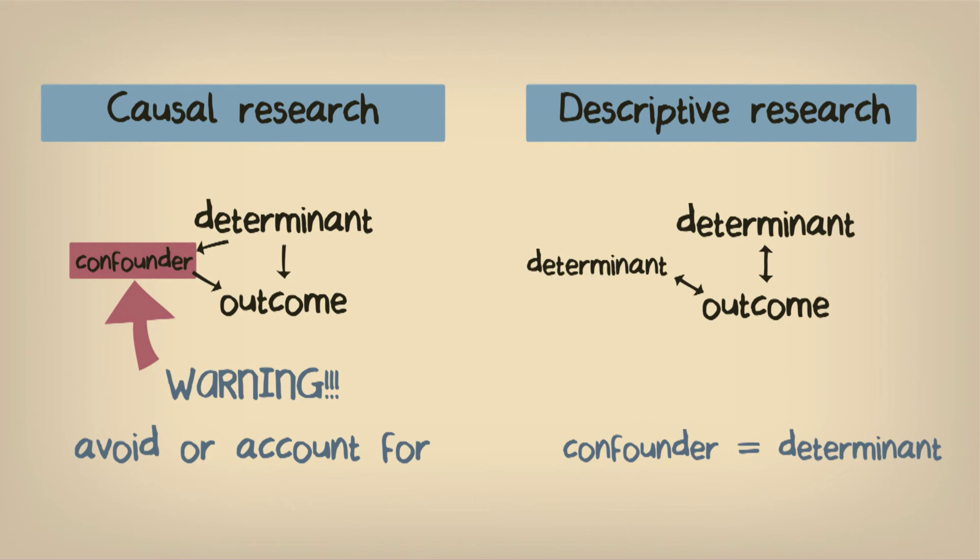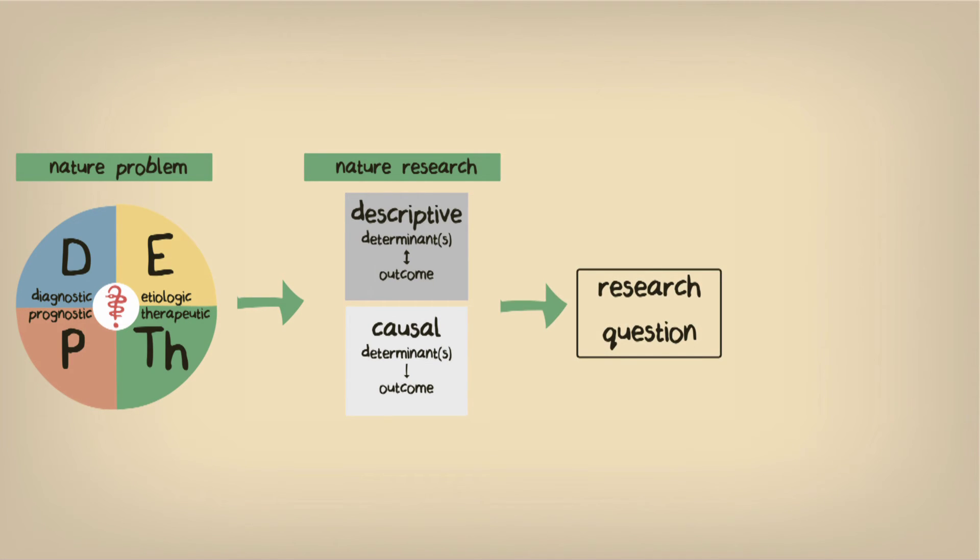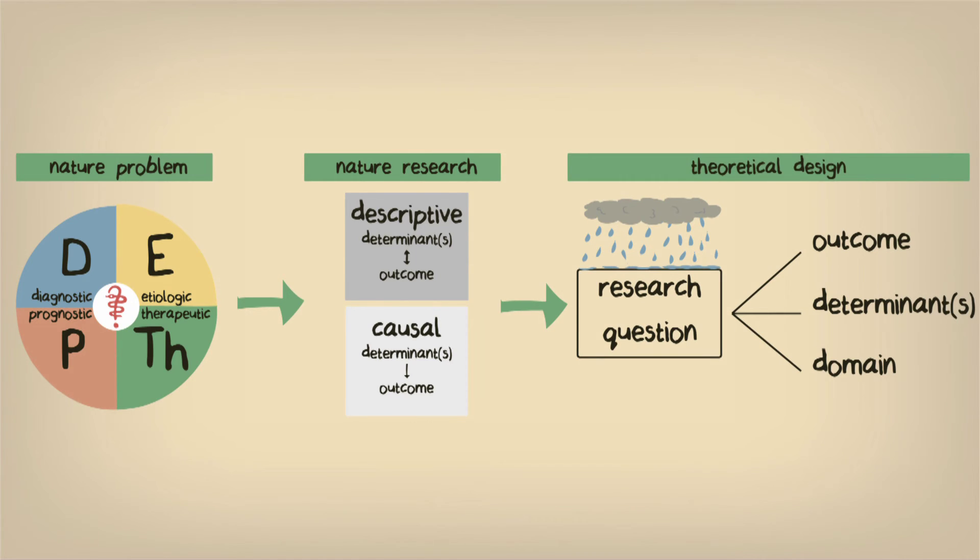Now that we have carefully categorized the nature of both our clinical problem and the research we would like to conduct, we can further develop our research question into one that is truly watertight. We can do this by specifying our research in terms of a relationship between the occurrence of an outcome and one or more determinants, within a clinically relevant population, who we'll refer to as the domain of our research. The definition of the occurrence of an outcome as a function of one or more determinants, or the occurrence relation, is referred to as the theoretical design of a study. And it's the first step in designing a clinical epidemiological study.